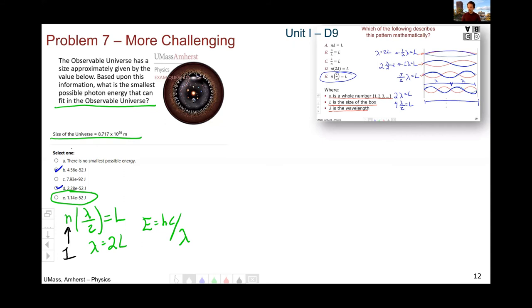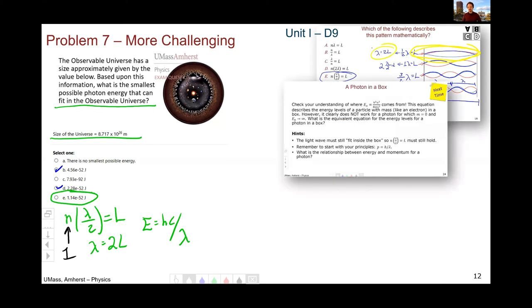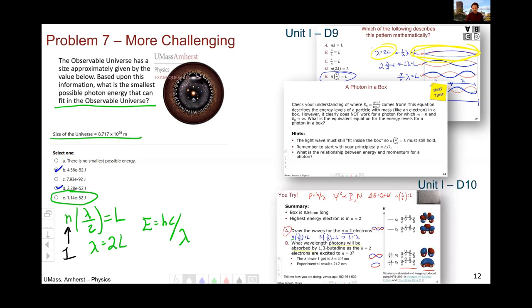What were the places to start with this? Unit one day nine, slide 19 is where we really identified that the lowest energy, the longest wave is twice the size of the box. There was a next time problem that same day on unit one day nine, where you worked through the energy levels for a photon in a box. And then of course the answers were there at the beginning of day 10. And this wave was again thought about on day 10, slide eight, the butadiene where you're looking at that longest wave.